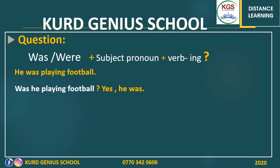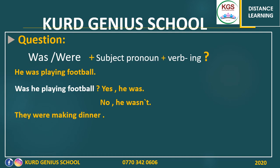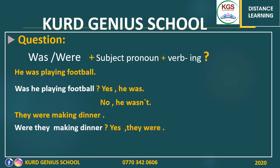You can answer yes or no. Because the question used 'was', you answer with 'was': yes, he was, or no, he wasn't. Another example: 'They were making dinner.' To change into a question, put 'were' at the beginning: 'Were they making dinner?' Because I asked with 'were', I answer with 'were': yes, they were, or no, they weren't.